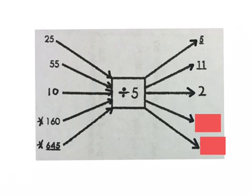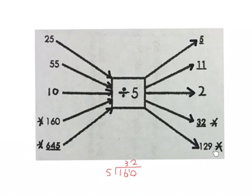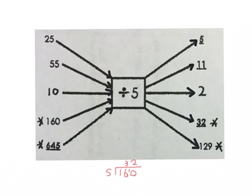Then I might get bigger numbers: 160, divide by 5. It might be necessary to do an extra little short division sum to get to my answer, but that's not the purpose of this video. The last one is 645, divide by 5, is 129. I will use a small short division to help me, but the purpose is I must take this number, divide it by 5 and get this answer.